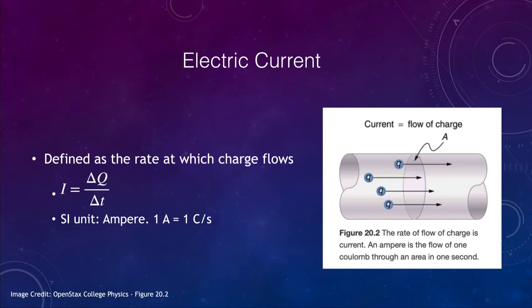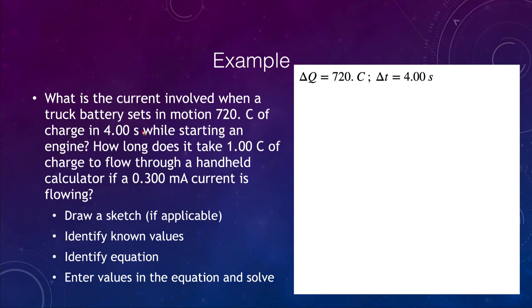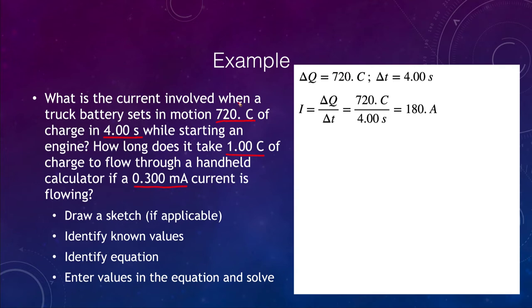Now we can go ahead and do a calculation. We want to calculate what the current is when a truck battery sets in motion 720 coulombs of charge in four seconds. The change in charge is 720 coulombs, the time is four seconds, and the current is defined as the change in charge divided by the change in time. Putting those in, we find a current of 180 amps — a very large amount of current needed to get that truck started.